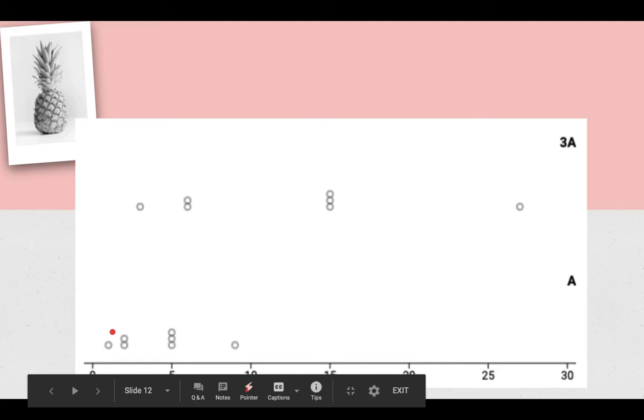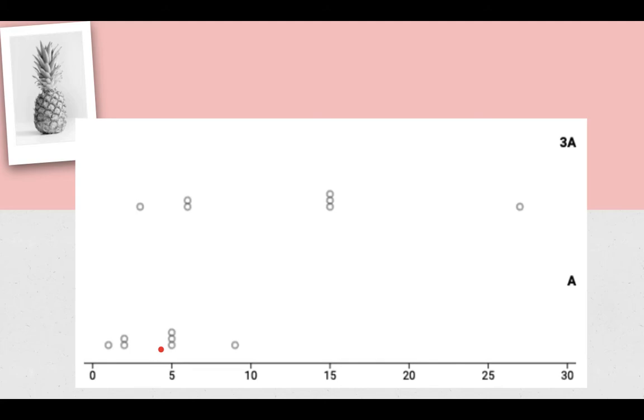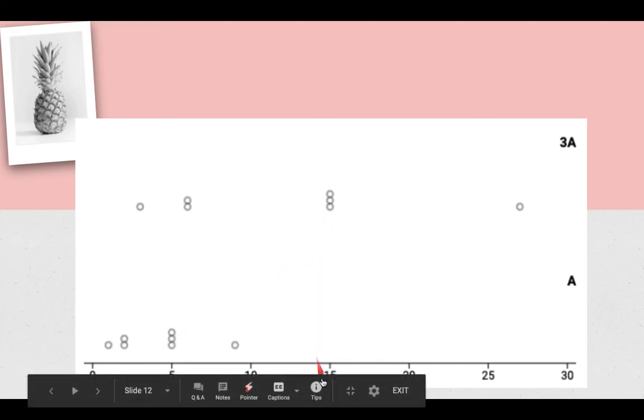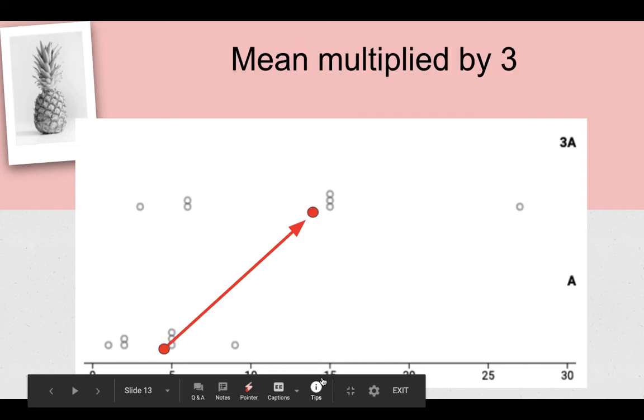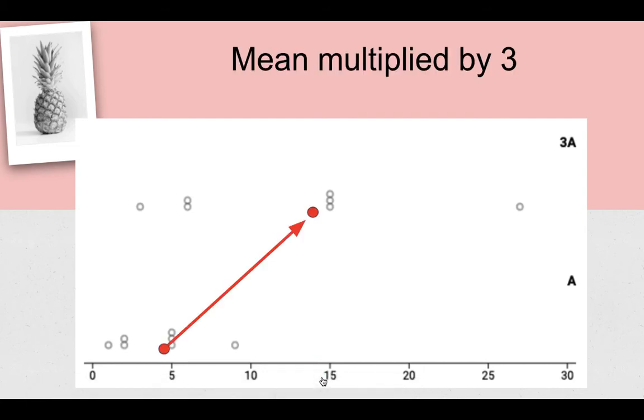So what's happened here? First off, what's happened to the center? Let's say that the center is just to the left of that pile of three. It's just a bit less than 5 to just a bit less than 15. So it looks like that's been multiplied by 3. So when you multiply each value by 3, the mean gets multiplied by 3.